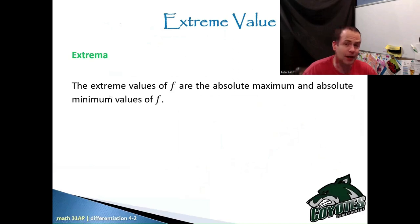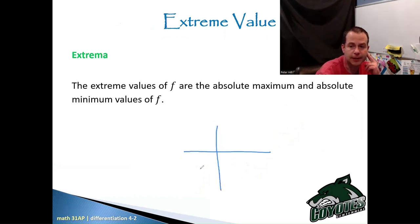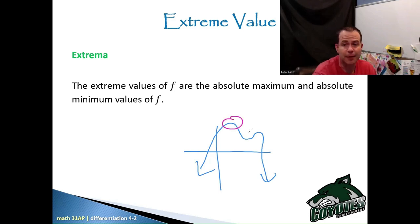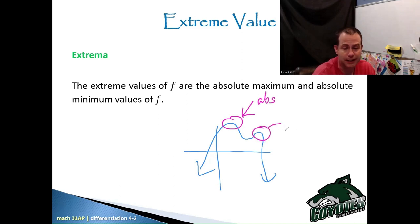So, extrema — the extreme values of F are the absolute maximum and absolute minimum values of F. If I gave you a graph, this graph is never going to get any higher than that point, so that point we would call an absolute maximum. Whereas another peak is not considered an absolute maximum, but it is a maximum for that little moment in time.